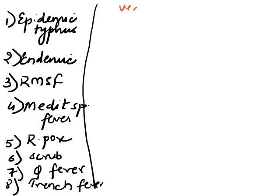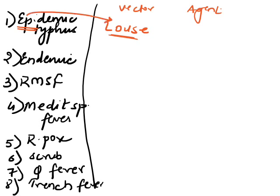We need to know the vector and the causative agent for each of these. For epidemic typhus, the vector is louse. Think of it this way: louse is a very epidemic condition — it spreads so fast from one person to another. So the arthropod or vector that spreads like an epidemic is louse.